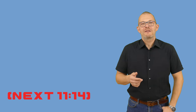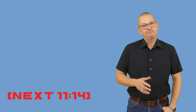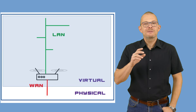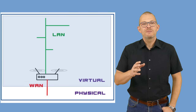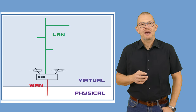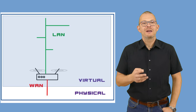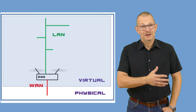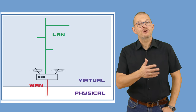Now we have a virtual LAN and a virtual WAN or internet inside VirtualBox. Let's build our first machine – the main router that will be the gateway between the virtual LAN and virtual WAN, and also provide IP addresses to all other machines in the virtual LAN.